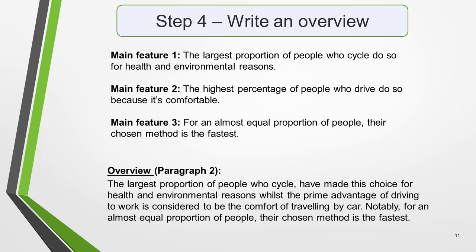In the second paragraph you should report the main features you can see in the graphic, giving only general information. The detail comes later in the essay. Here are the key features we picked out earlier. I've added the third one I identified, as it will fit well in the overview. Main feature 1, the largest proportion of people who cycle do so for health and environmental reasons. Main feature 2, the highest percentage of people who drive do so because it's comfortable. And main feature 3, for an almost equal proportion of people, their chosen method is the fastest. Now form these ideas into two or three sentences, with a total of around 40 words. State the information simply using synonyms where possible. No elaborate vocabulary or grammar structures are required. Just use the appropriate words and the correct verb tenses.